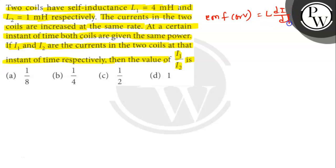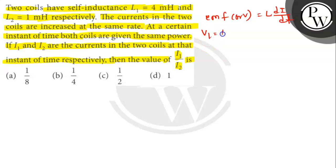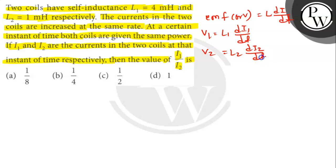Here V is the induced electromotive force or voltage, L is inductance, and di by dt is the rate of change of current in the coil. So V1 equals L1 times di1 by dt, and V2 equals L2 times di2 by dt. This is equation 1.